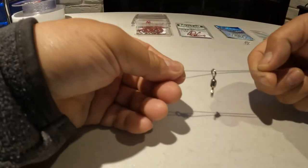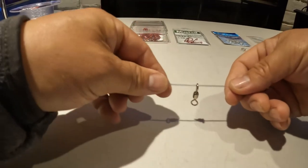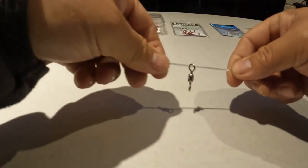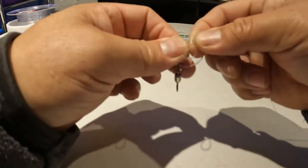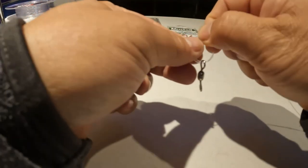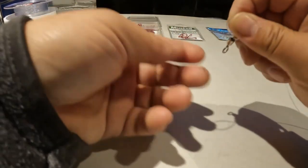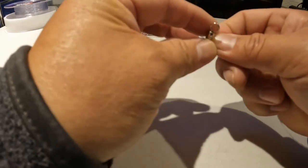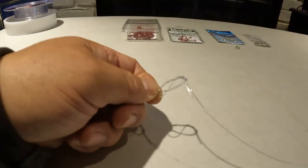And what you're going to do is you're just going to make a loop like so. Go under, over, and then under and over again, two times. And then once again, with this loop right here, you're going to thread the barrel swivel in, and then you're going to pull it.